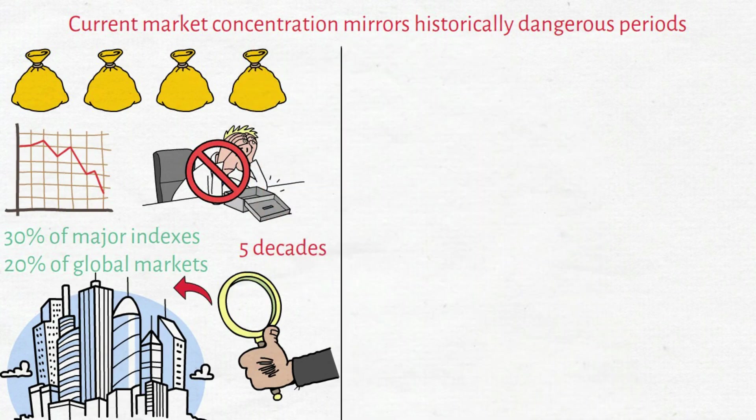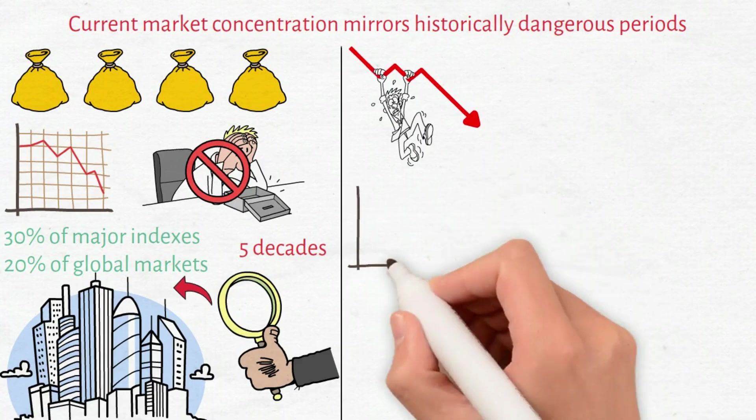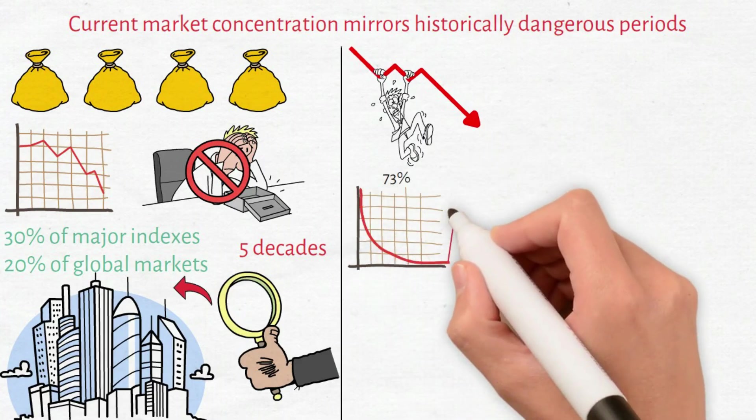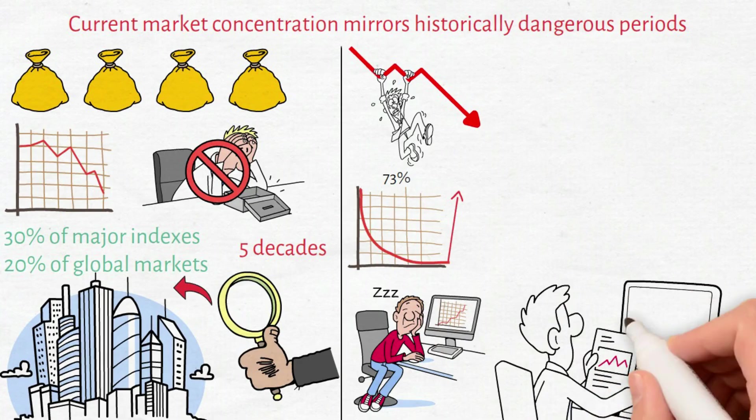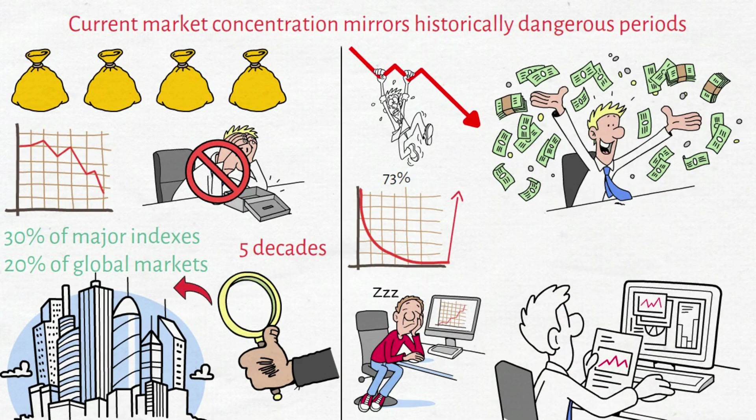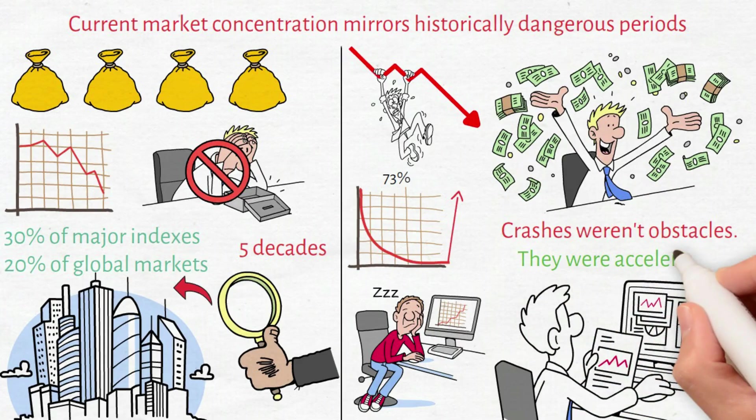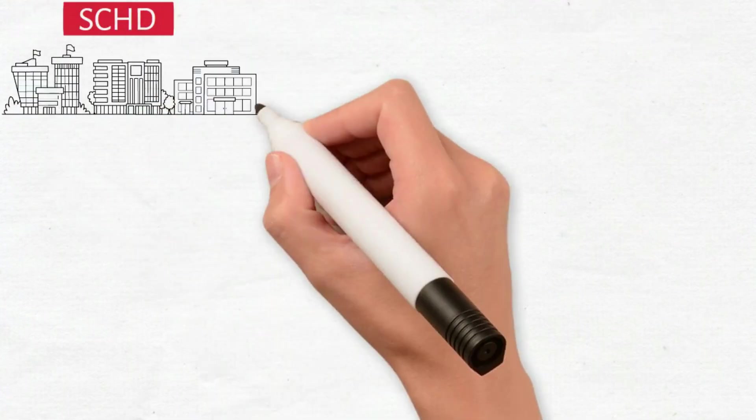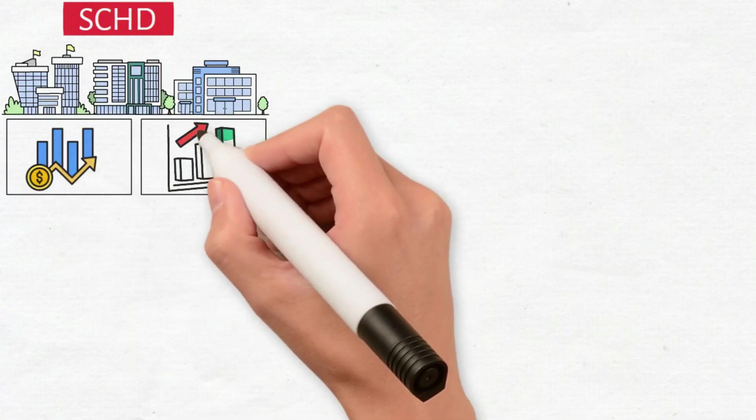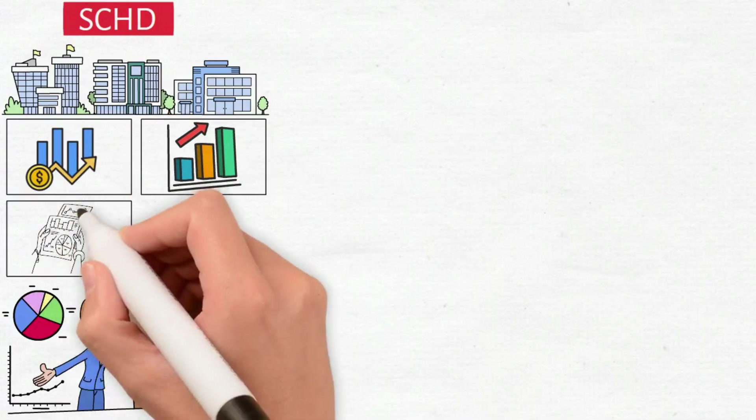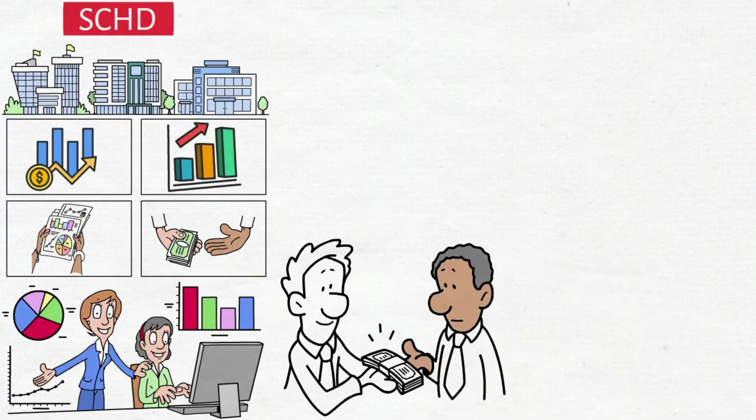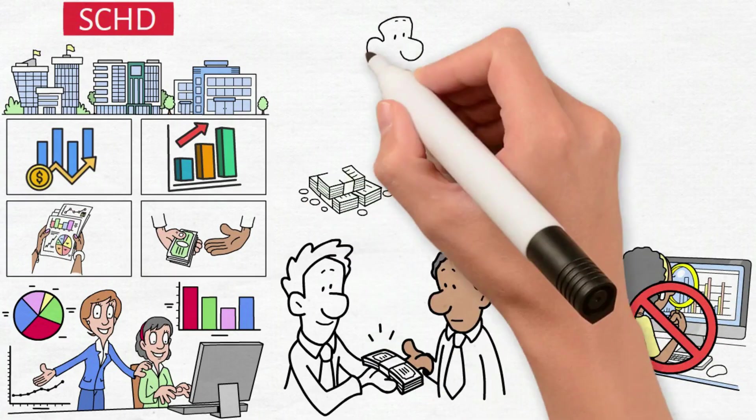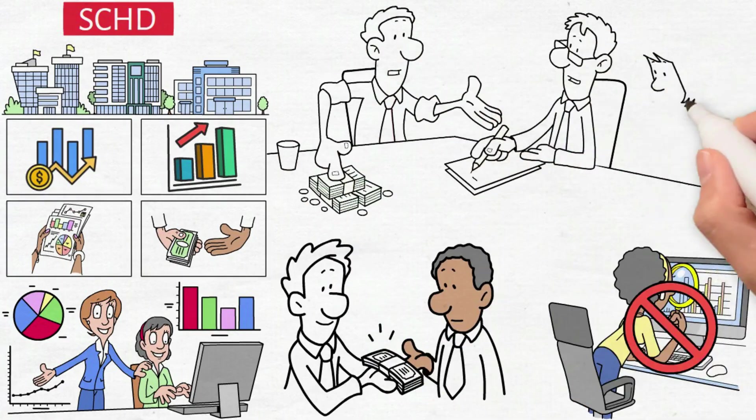Consider this perspective shift. During the dot-com crash, tech-heavy indexes plummeted 73% and required years for recovery. Tech holders who bought at peaks waited over a decade just to break even. Meanwhile, income growth investors who systematically purchased through the crash built fortunes. Crashes weren't obstacles. They were accelerators. SCHD provides exposure to proven payout growers trading at reasonable valuations. You gain access to quality companies with fortress balance sheets, consistent cash generation, and demonstrated commitment to rewarding shareholders. You're not speculating on the next revolution. You're investing in established enterprises that compensate ownership.